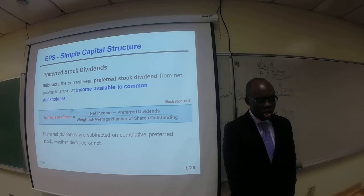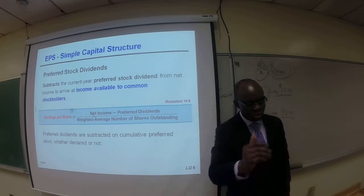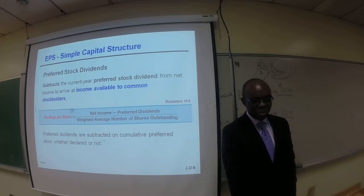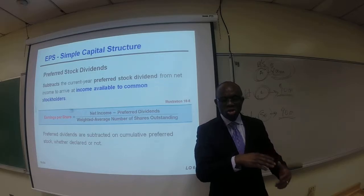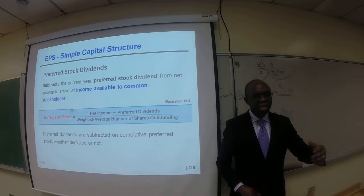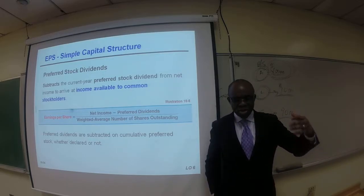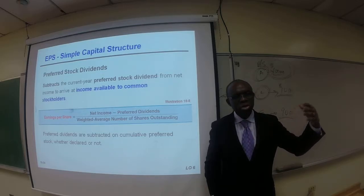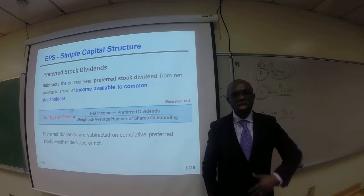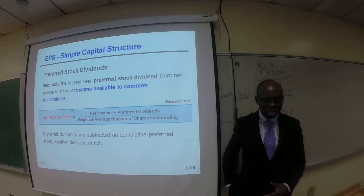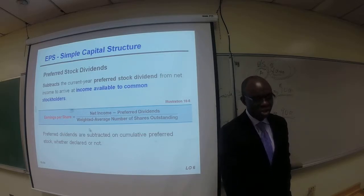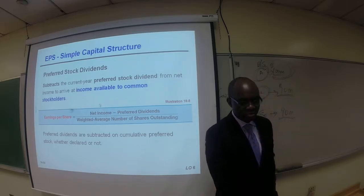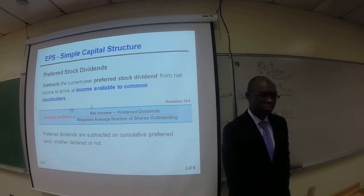Preferred dividends are subtracted for cumulative preferred stock whether declared or not. Cumulative preferred stock means the company is obligated to pay dividends in arrears if they are not paid in the current year. The rule is: preferred dividends are subtracted for cumulative preferred stock whether declared or not — but this applies only to cumulative preferred stock, not non-cumulative preferred stock.